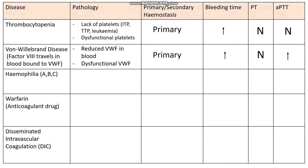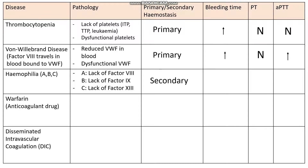Now let's move on to haemophilias A, B, and C. In haemophilia A we have a lack of factor VIII, in B a lack of factor IX, and in C a lack of factor XI. Because this affects the clotting cascade, we have an issue with secondary haemostasis. Factors VIII and IX are part of the intrinsic pathway. So our bleeding time is going to be normal, our PT is going to be normal because we're not affecting factors III and VII, and our APTT is going to be raised.